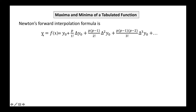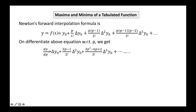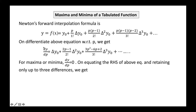For maxima and minima of a tabulated function, take the first order derivative and set it to zero. From Newton's forward interpolation formula, differentiating with respect to p: dy/dp = Δy₀ + (2p−1)/(2!)Δ²y₀ + (3p²−6p+2)/(3!)Δ³y₀ + … For maxima or minima, set dy/dp = 0. Retaining up to third order differences: Δy₀ + (2p−1)/2·Δ²y₀ + (3p²−6p+2)/6·Δ³y₀ = 0.